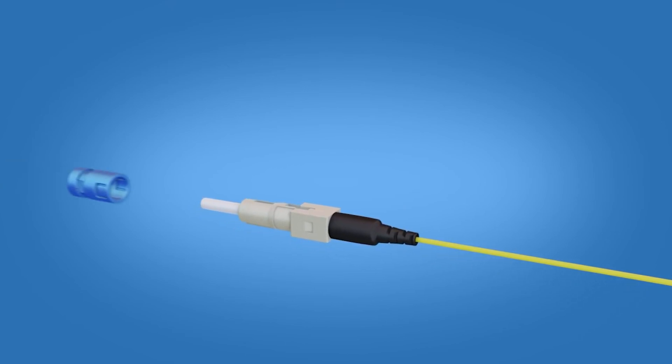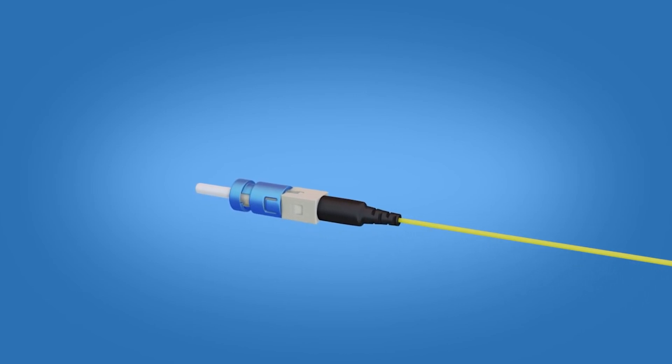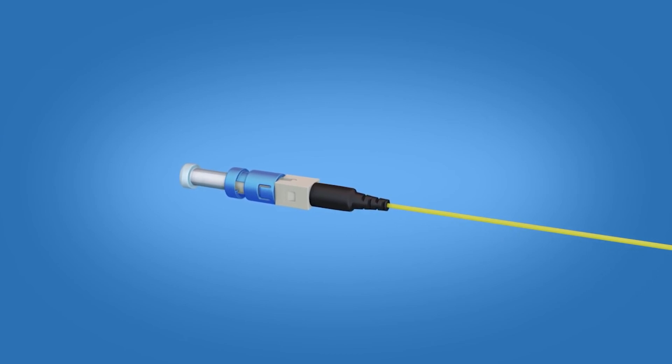Apply the connector housing to the connector body. You will not be able to re-engage the wedge clip after the housing is applied. The termination is now complete.